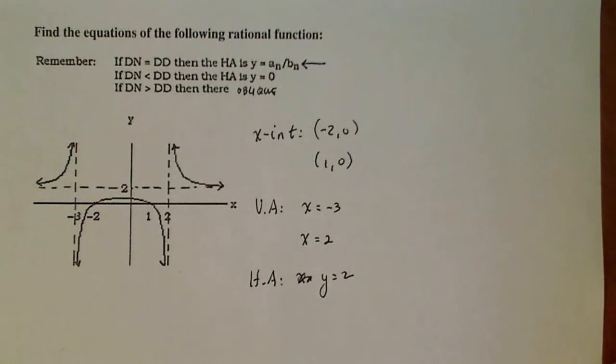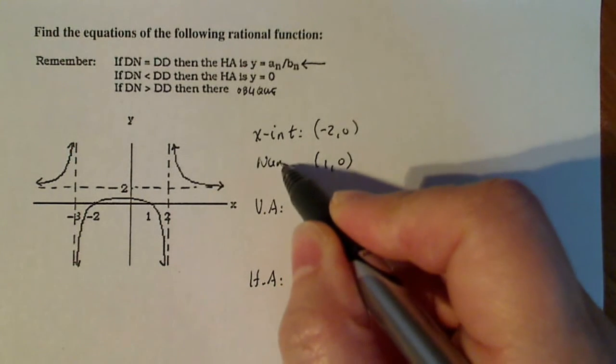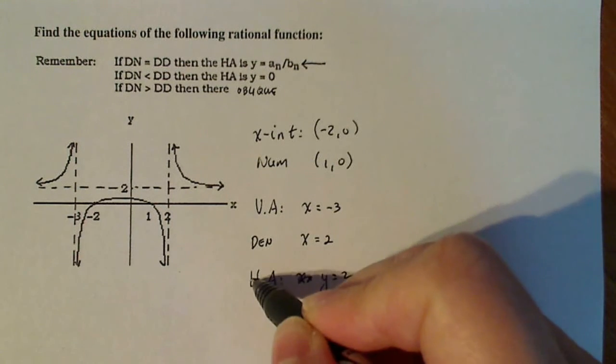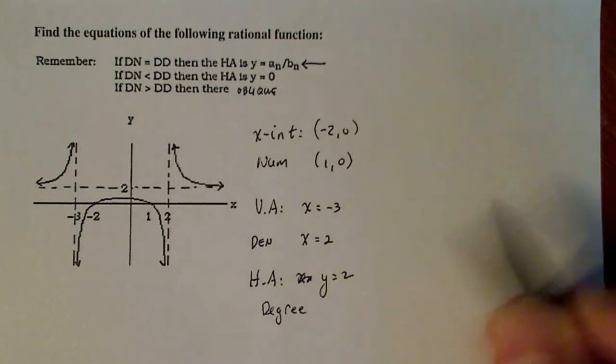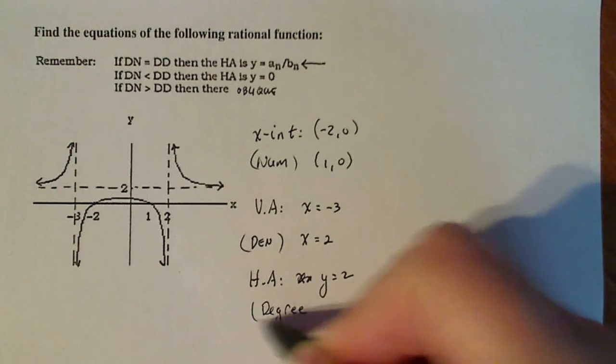Based on this, what I know is that x-intercepts are in the numerator, the vertical asymptotes are in the denominator, and the horizontal asymptote has to do with the degree of the polynomials that are in the numerator and denominator.